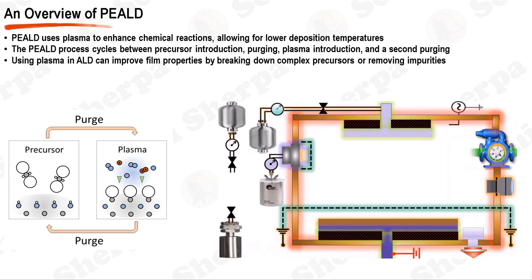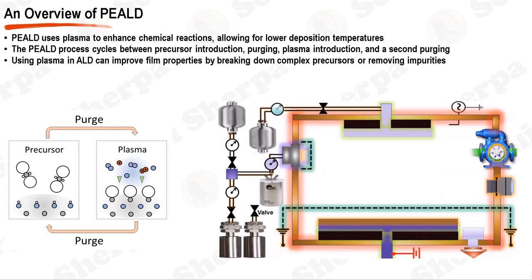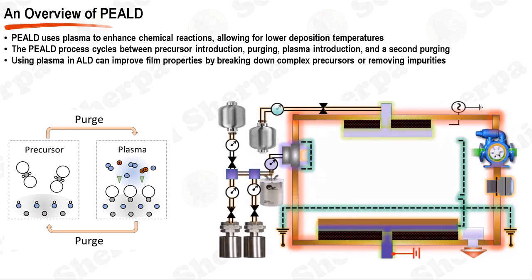The PEALD process begins in the ALD reactor or chamber — a specially designed environment where the deposition takes place. Within the reactor, a substrate holder is used to secure the substrate or wafer. The holder and the substrate are typically grounded to ensure electrical stability during the process. The reactor chamber has an inner viewport, which allows operators to monitor the deposition process visually. A vacuum pump is employed to remove air and other potential contaminants from the reactor chamber, and exhausted gases are safely directed away through an exhaust system.